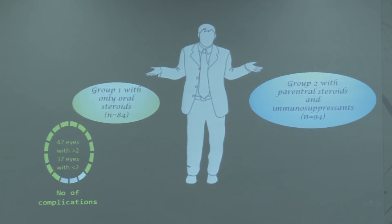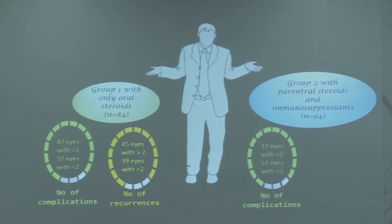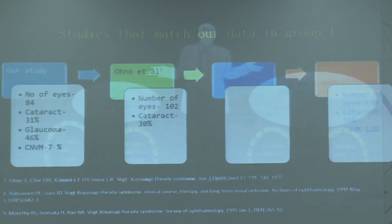The number of complications in Group 1 were 47 eyes with more than 2 complications, whereas we got only 37 eyes with more than 2 complications in Group 2. In Group 1, we had 45 eyes with more than 2 times of recurrences, whereas in Group 2 there were only 19 eyes with more than 2 complications.